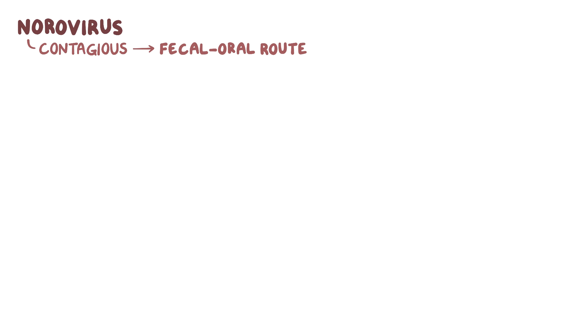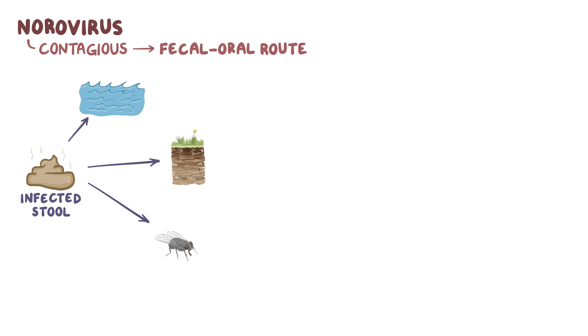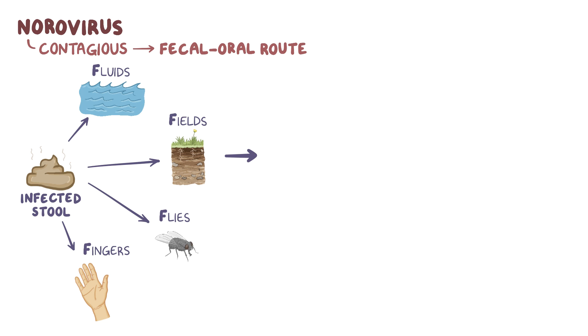Norovirus is very contagious, and it's primarily transmitted from person to person via the fecal-oral route. In other words, you catch it by ingesting stool particles of someone who is sick. This can happen if infected stool ends up in the water supply or on agricultural fields, if flies land on it and transfer stool particles to other places, or by touching contaminated surfaces. You can summarize it as the four Fs: fluids, fields, flies, and fingers. As a result, norovirus can end up in food and drinking water, and is often spread via uncooked foods like leafy vegetables and shellfish.